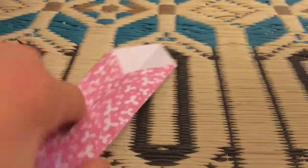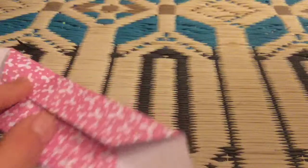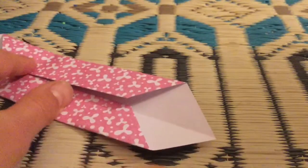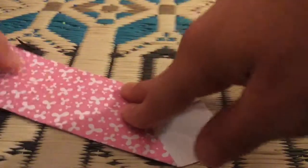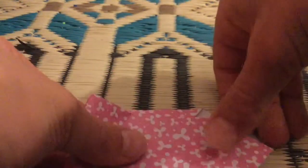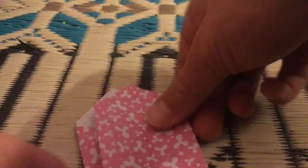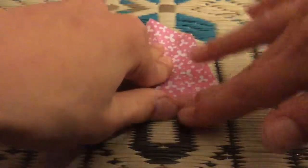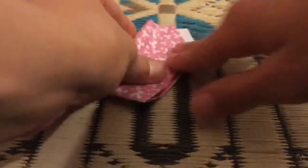Now you're going to fold this edge, I mean this corner, to the other corner, over this way. And you want to make this pretty perfect, and then unfold.